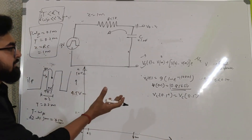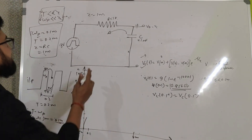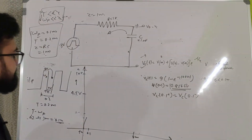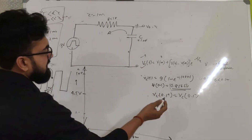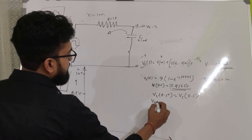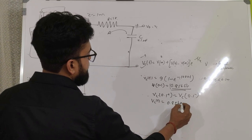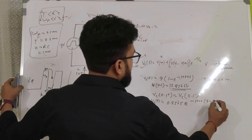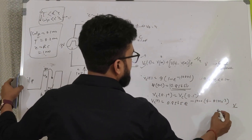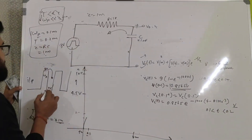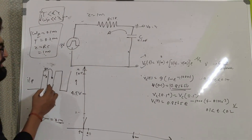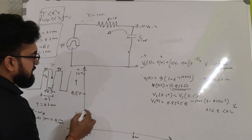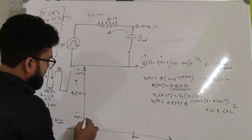Right after 0.1ms, Vc(0.1⁻) equals Vc(0.1⁺) — it is as if a fully charged capacitor has its switch closed again and it begins discharging. The discharging equation is: Vc(T) = 0.8565 × e^(−1000 × (T − 0.1ms)), valid for T greater than 0.1ms but less than 0.2ms. Right after 0.2ms the capacitor starts charging again as the input switches back to 9 volts.